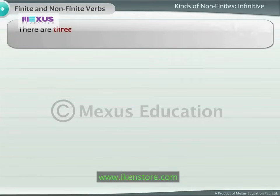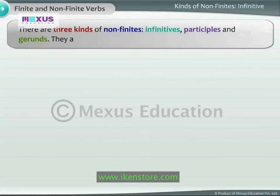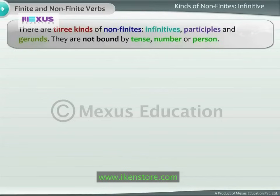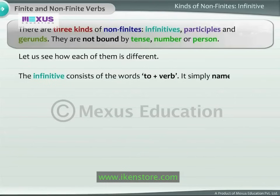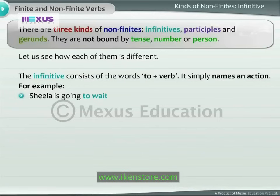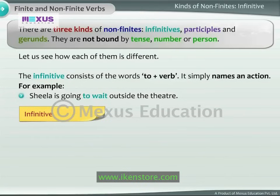There are three kinds of non-finites: infinitives, participles, and gerunds. They are not bound by tense, number, or person. The infinitive consists of the words 'to' plus a verb. It simply names an action. For example, 'Sheila is going to wait outside the theater.' The infinitive is formed by joining the words 'to' and 'wait.'